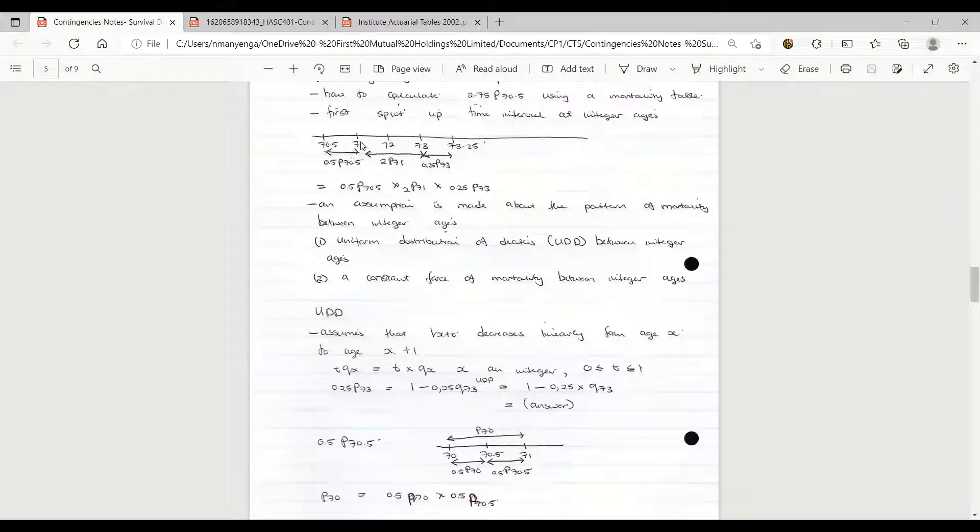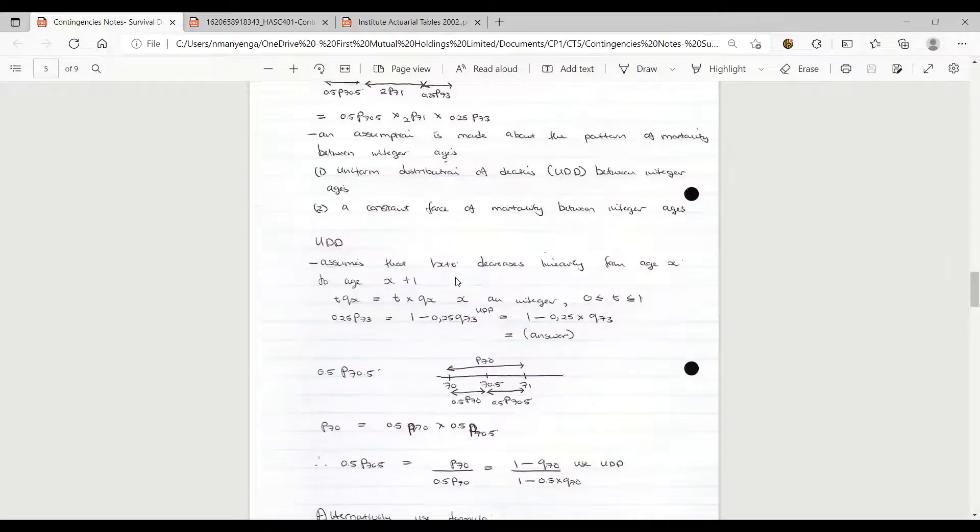What we need to do in this case is to make an assumption about the pattern of mortality between the integer ages, that is 70 to 71, 71 to 72. The assumptions that are normally used is that we assume that there's a uniform distribution of deaths between the integer ages, or we assume that there is a constant force of mortality between the integer ages.